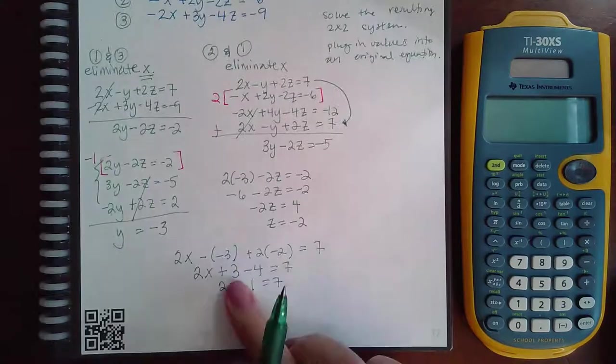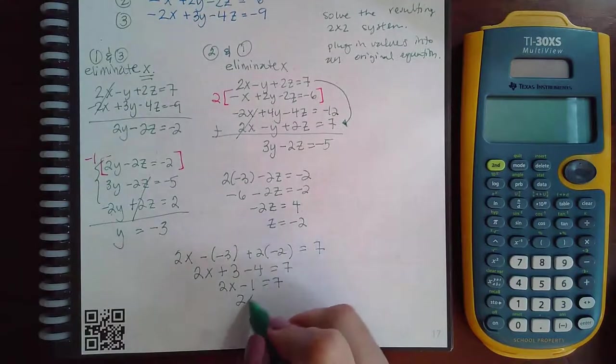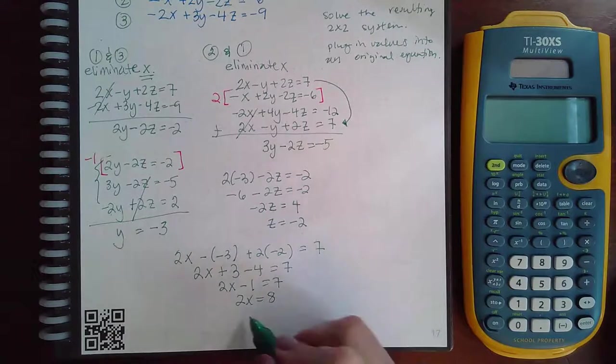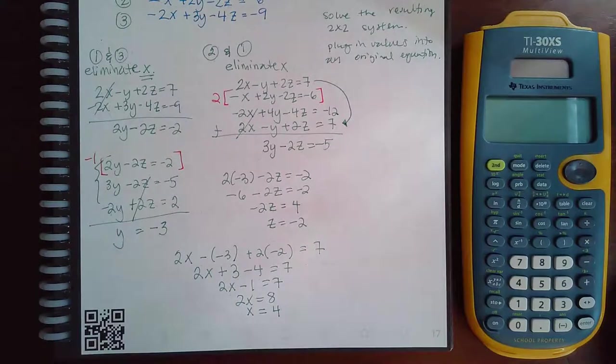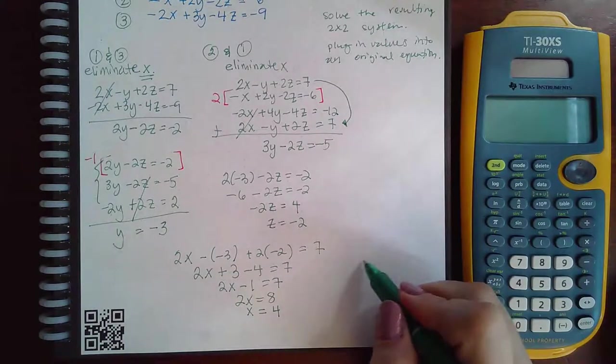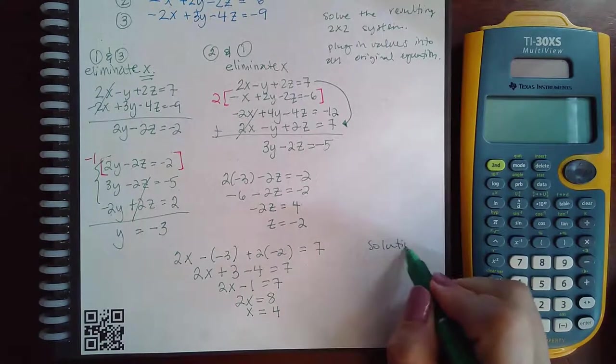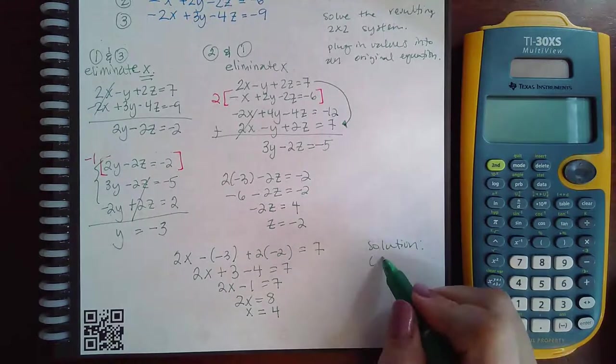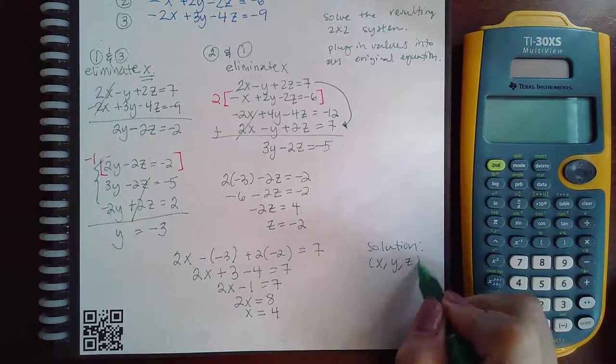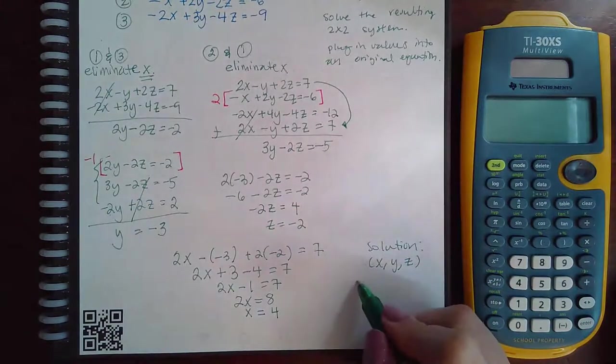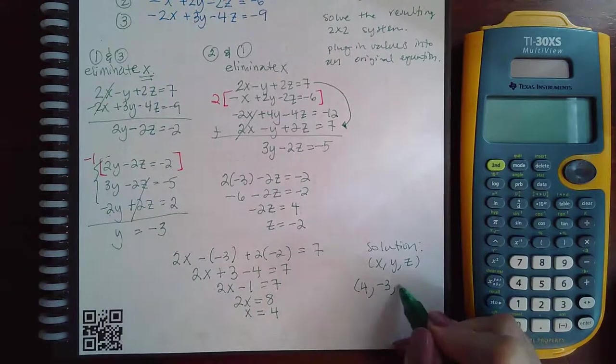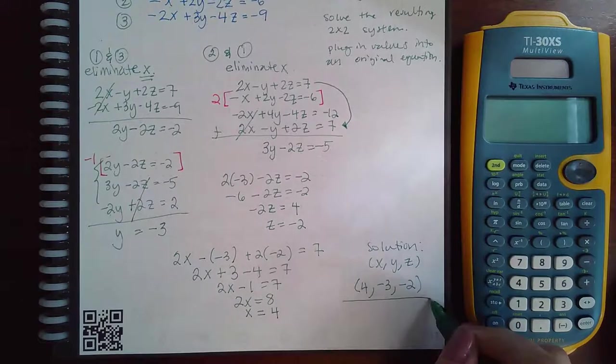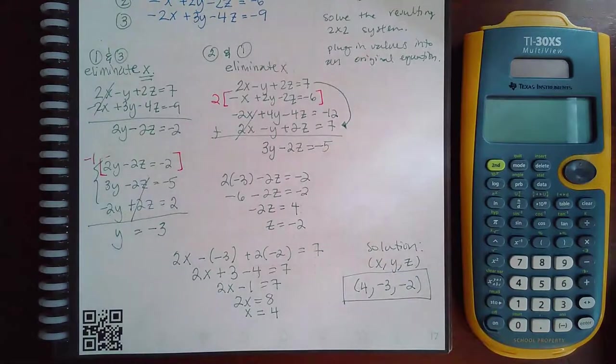I can add 1 over to the other side. I will get 2x equals to 8. And if I divide both sides by 2, I get x equal to 4. So now if I want my solution, I usually want it in the x, y, and z point format. So my x value is 4, my y value is negative 3, and my z value is negative 2. And so this is the solution.